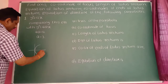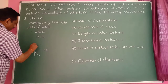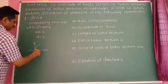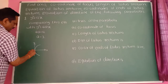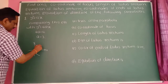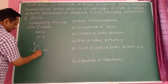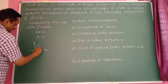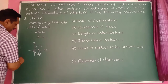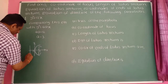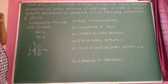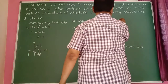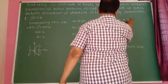The equation is y² = 4ax, and the parabola opens to the right-hand side. The vertex is at the origin, the x-axis is the axis of the parabola. S is the focus, and the line passing through the focus perpendicular to the axis is the latus rectum (L and L'). The directrix is on the left side. Therefore, the axis of the parabola is the x-axis.